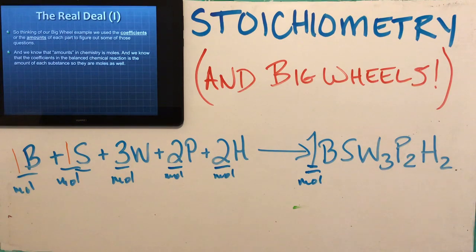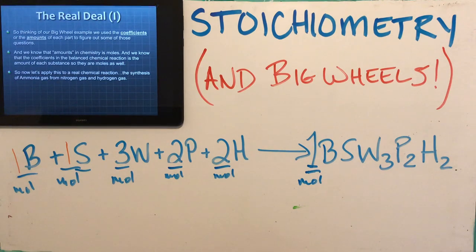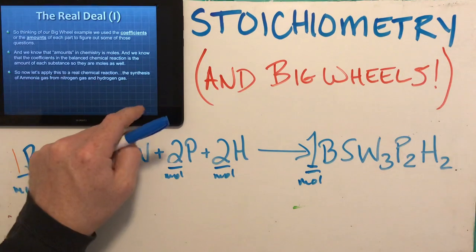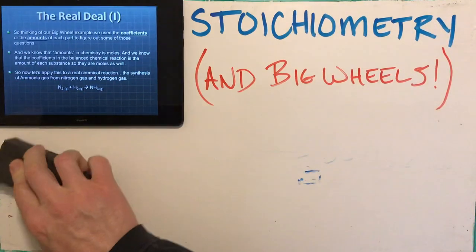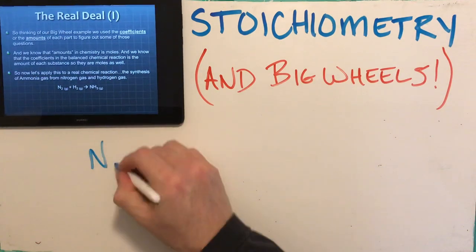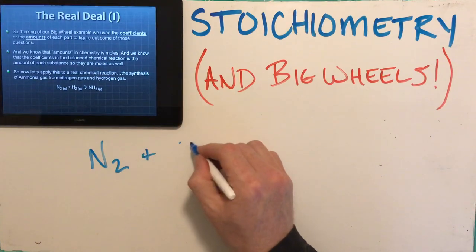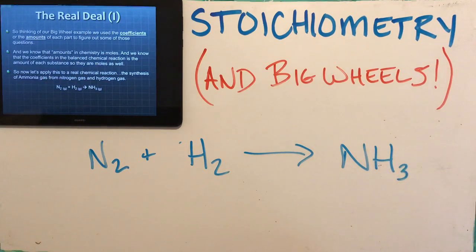Enough with the big wheels — let's apply this to a real chemical reaction. We're going to use the synthesis of ammonia from nitrogen gas and hydrogen gas. Both nitrogen and hydrogen are diatomic gases, so: N₂ + H₂ → NH₃.